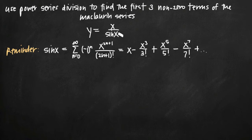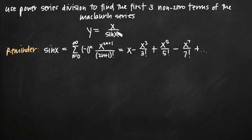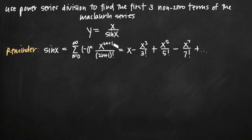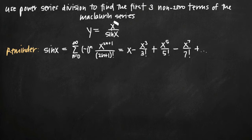The first thing we need to do is find a power series representation for sine of x. We can leave x as it is because it's already in the form of a polynomial, but sine of x is not, so we need to find a power series representation for it. The Maclaurin series of sine of x is already well known, and if we expand it, what we get is x minus x cubed over 3 factorial, etc.